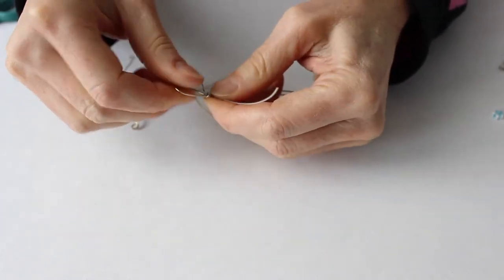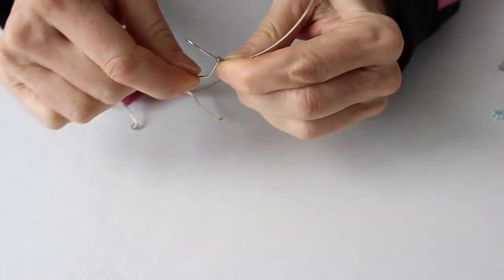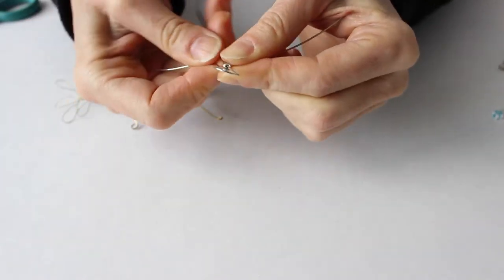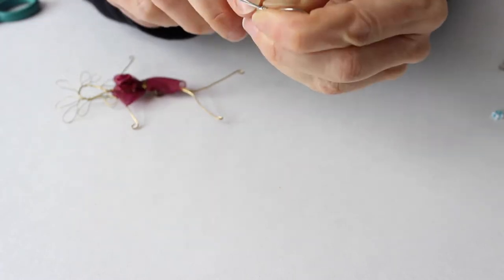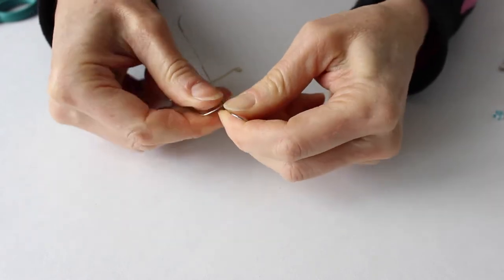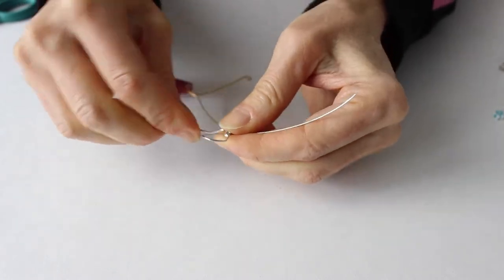You can even do it three times, and then bring it down at the back and twist it around again. So those are going to be the arms.